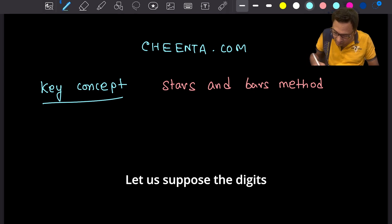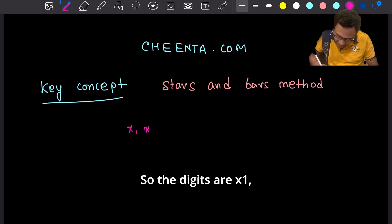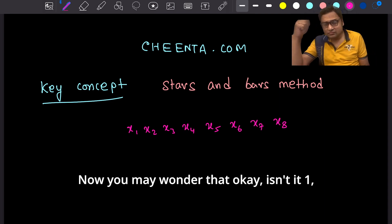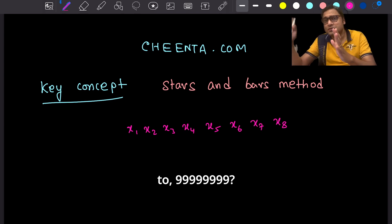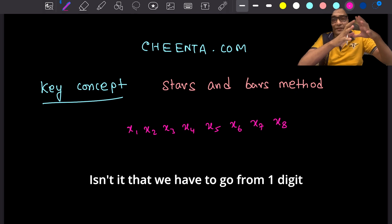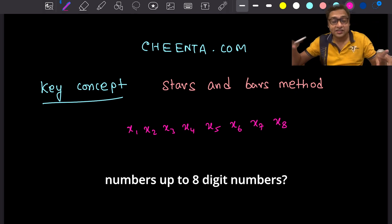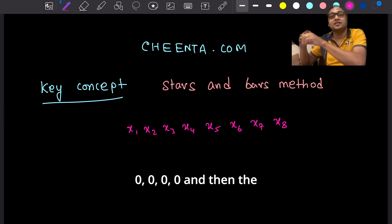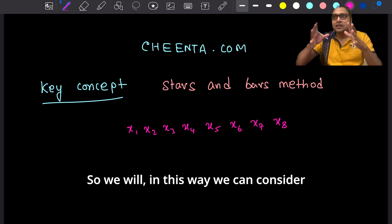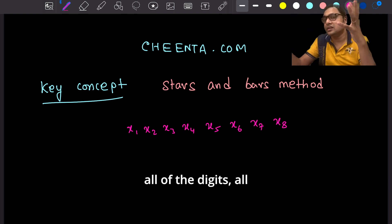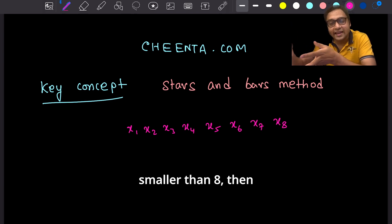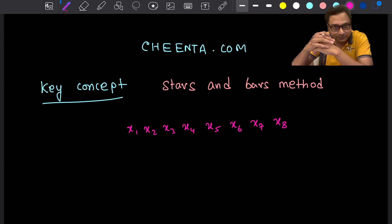Suppose the digits are X1, X2, X3, X4, X5, X6, X7, X8 — there are eight digits. You may wonder: isn't it that we have to go from one-digit numbers up to eight-digit numbers? Yes, of course. But you can write a one-digit number as a bunch of leading zeros — 0, 0, 0, 0, 0, 0, 0 and then the one digit. In this way, we can consider all numbers to be eight-digit numbers. If the actual significant digits are fewer than eight, we simply have leading zeros.